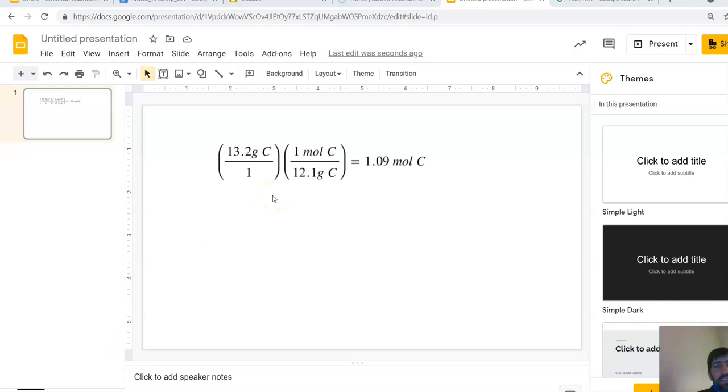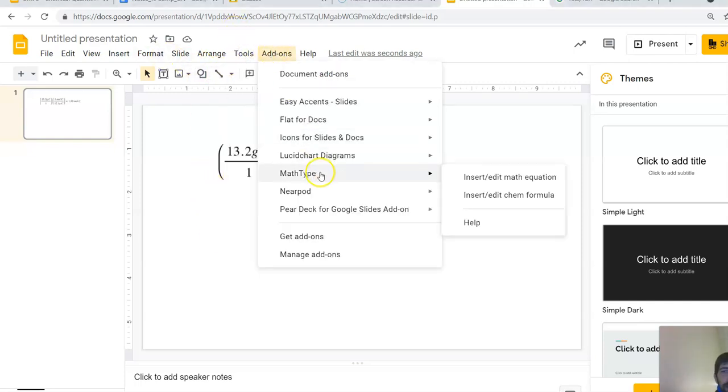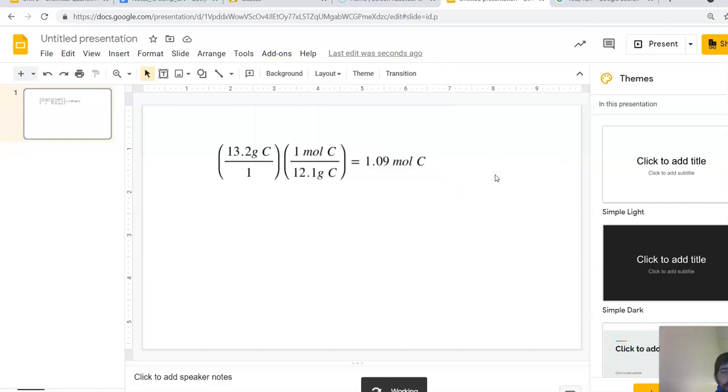Here's how you can show your work with dimensional analysis for chemistry. If you want to convert grams into moles using dimensional analysis, you can go to add-ons and there's this MathType function where you can insert or edit a math equation.